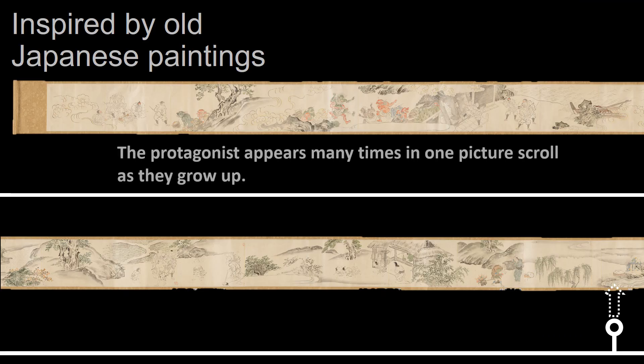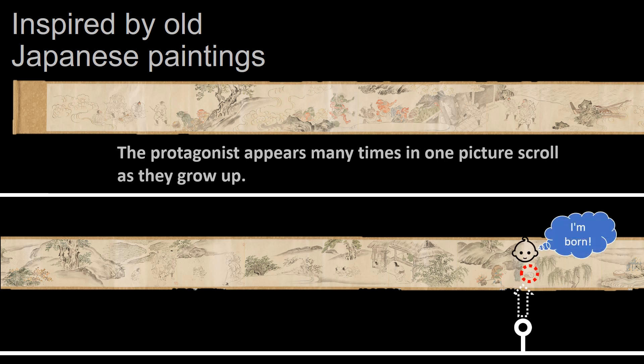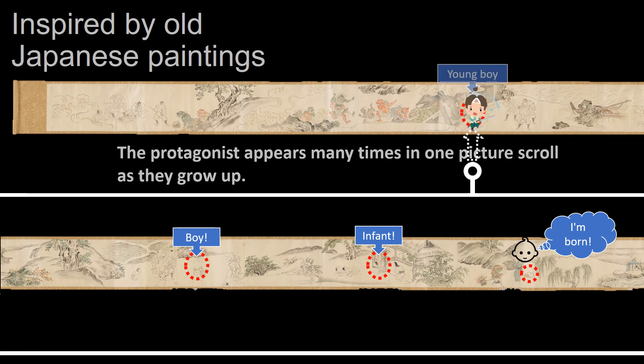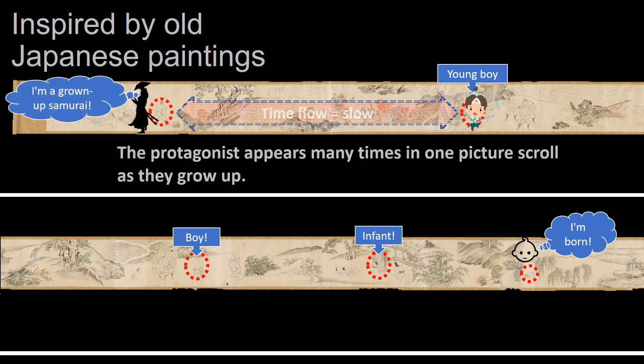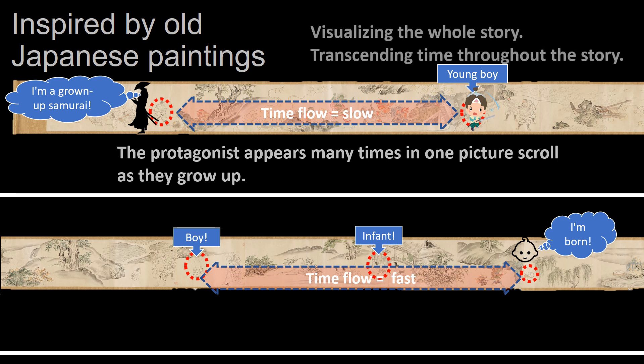Inspired by all Japanese paintings. I am born. Infant. Boy. The protagonist appears many times in one picture scroll as they grow up. Young boy. I am a grown up samurai. Visualizing the whole story, transcending time throughout the story. Here, time flow is slow. Here, time flow is fast.